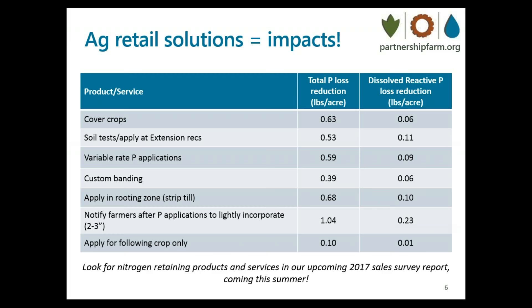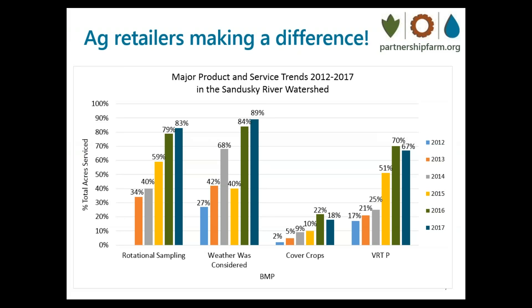Today we'll hear a great overview of some of the issues we're facing with nutrient losses with a focus on nitrogen. Ag retailers are making a difference — our annual surveys show large increases in variable rate phosphorus application in the Sandusky River watershed, increasing from 17% of acres serviced in 2011 to 70% in 2016 and 2017. In 2015, we secured funding for ag retailers to offer a discount on variable rate to farmers in the Sandusky River watershed who had not used it before.